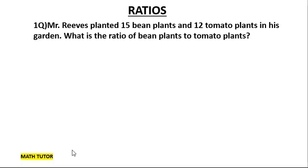Hello kids, welcome to Math Tutor. Today we are going to see word problems in ratios. I hope you already checked our latest video on ratios. Now let us see some word problems on ratios. First question: Mr. Reese planted 15 bean plants and 12 tomato plants in his garden. What is the ratio of bean plants to tomato plants? Whenever you are reading a word problem, you have to read the question twice.